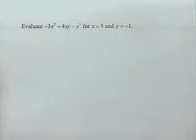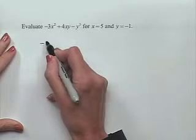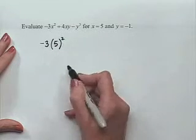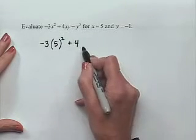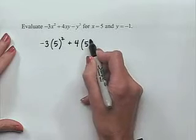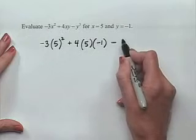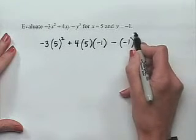In the following algebraic expression, we'll have more than one variable. Evaluate negative 3x squared plus 4xy minus y cubed for x equals 5 and y equals negative 1. We substitute: negative 3 times 5 squared, plus 4 times 5 times negative 1, minus negative 1 cubed.